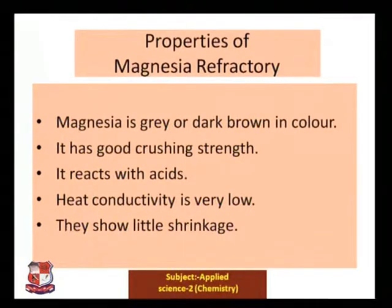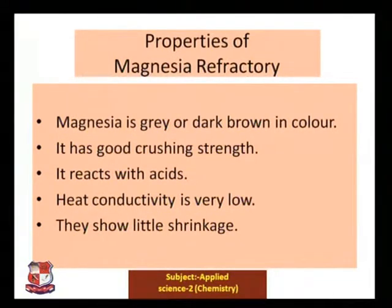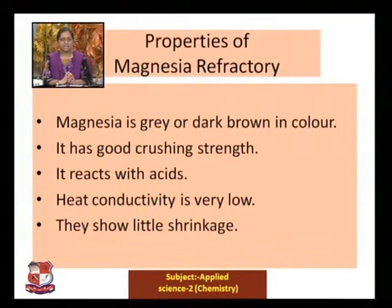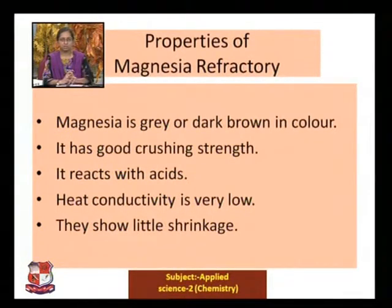Properties of magnesia refractory: magnesia is gray or dark brown in color. It has good crushing strength, reacts with acid, has low heat conductivity, and shows little shrinkage. These are the important properties of magnesia refractory.